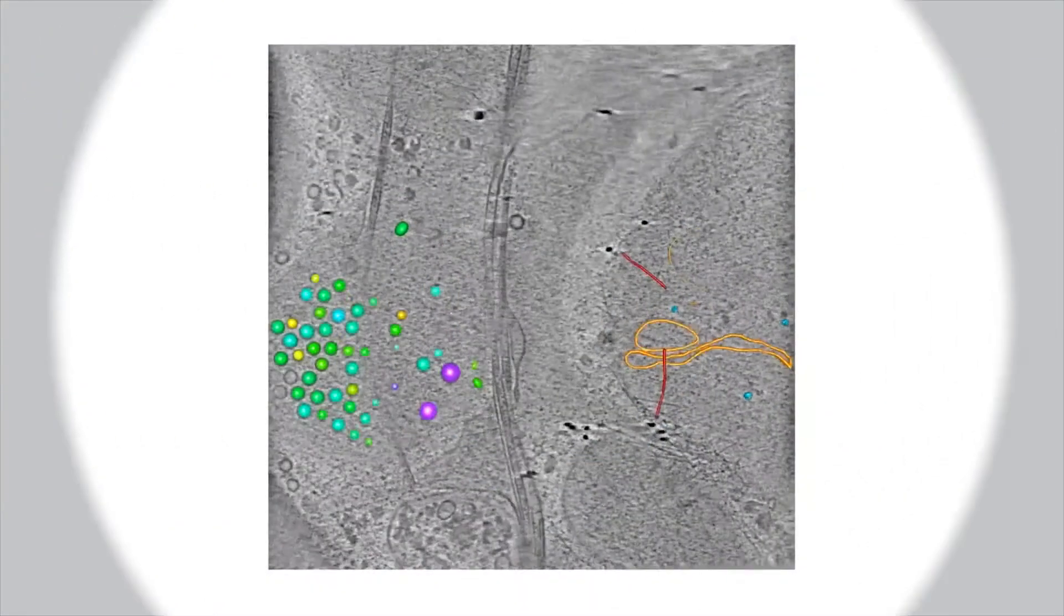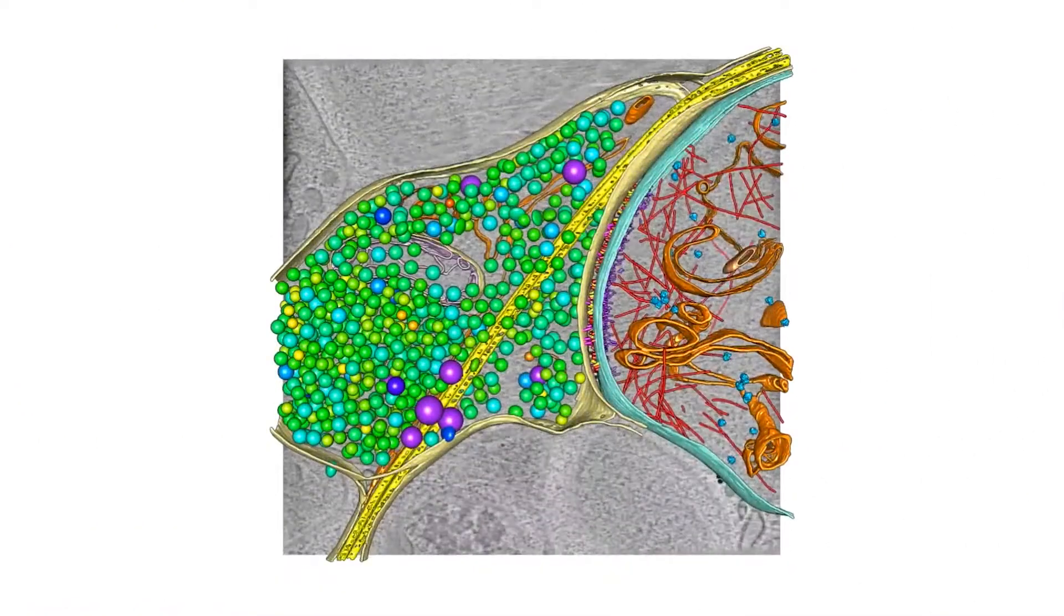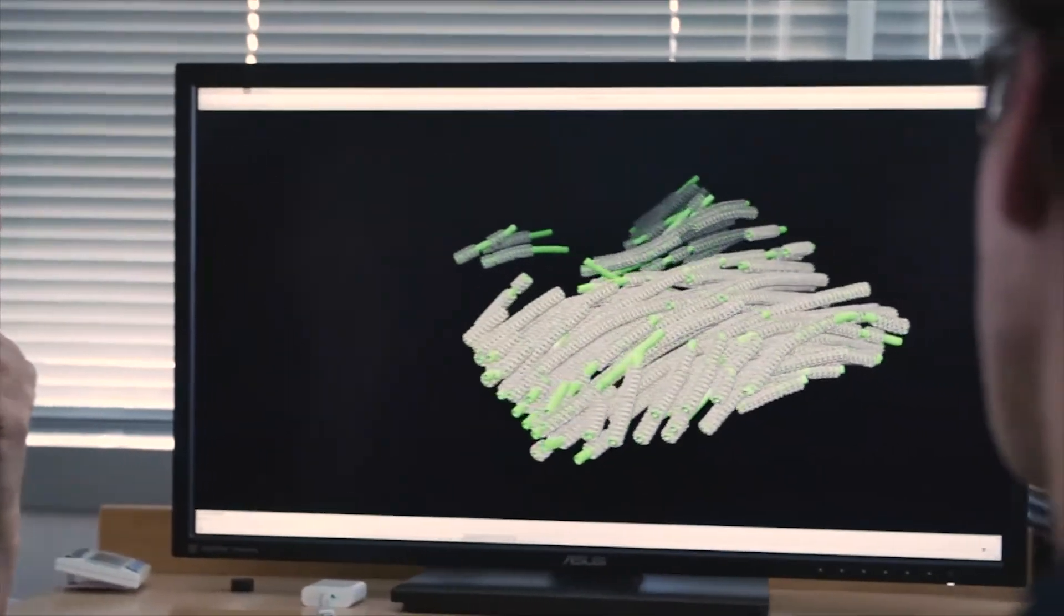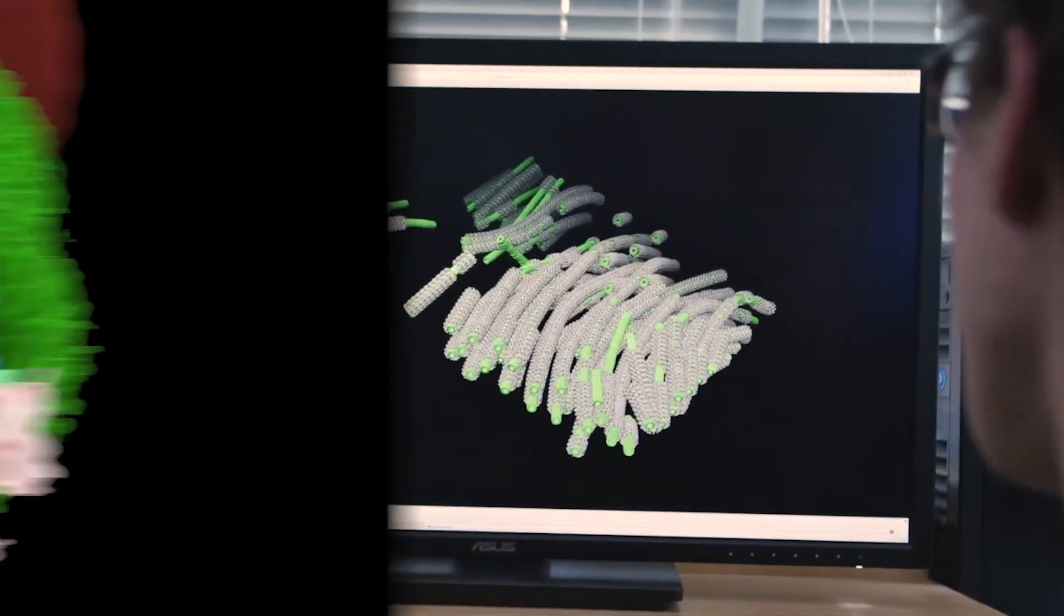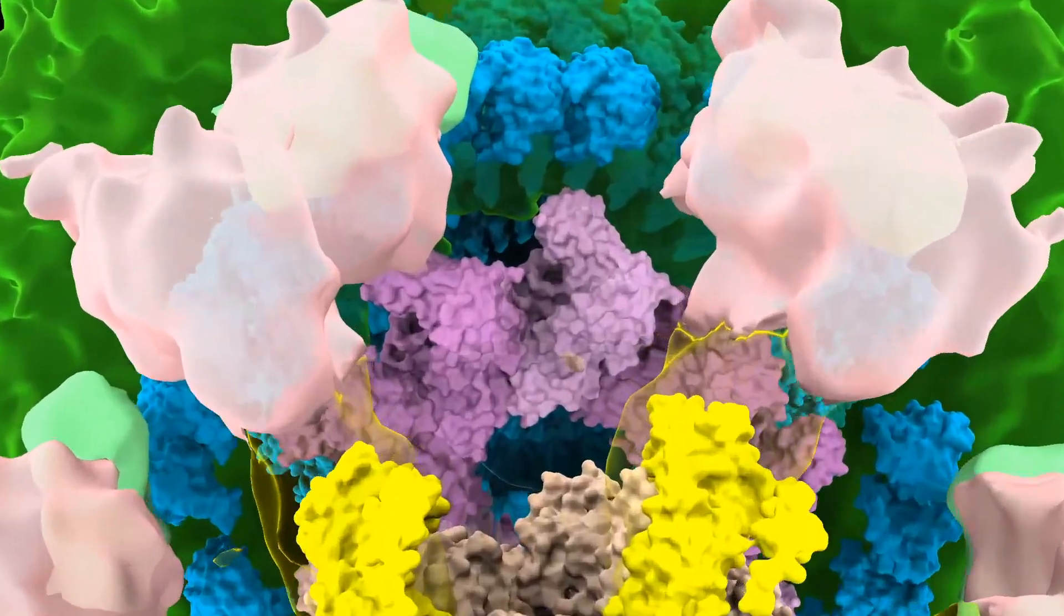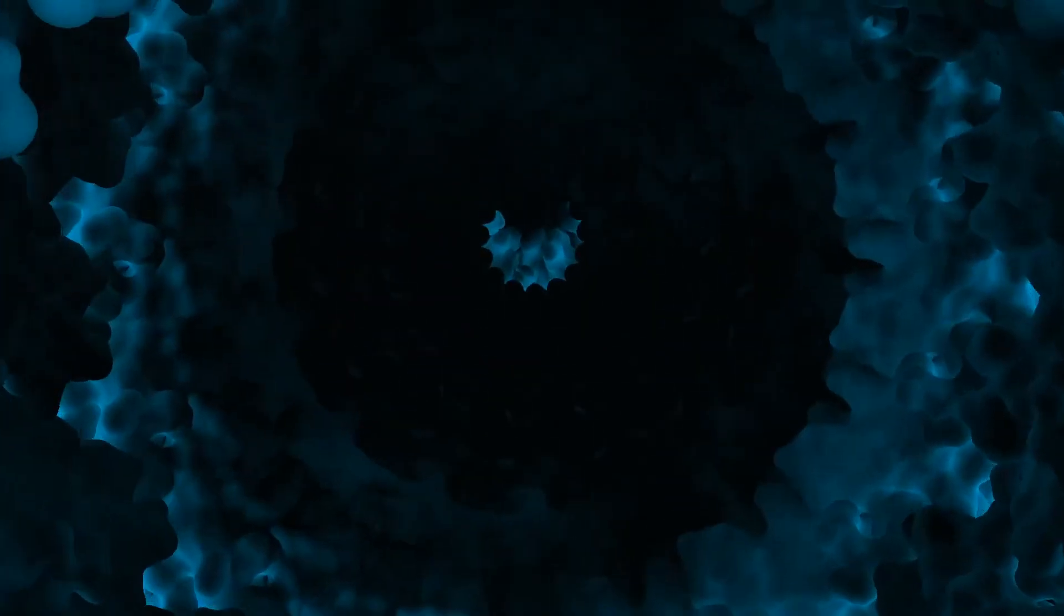Cryoelectron tomography provides 3D snapshots of proteins at work within their functional cellular environments. These 3D snapshots allow us to understand how proteins and other molecules work together to carry out major processes in a cell.